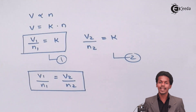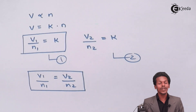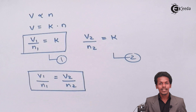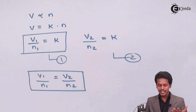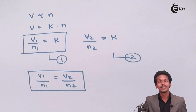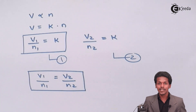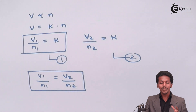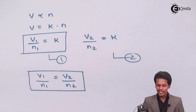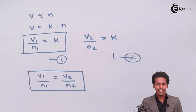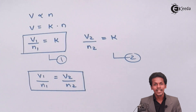Avogadro's Law basically depends on the number of moles as well as Avogadro's number, because for one mole of a gas it contains 6.022 × 10²³ particles or molecules of that gas. For one mole, as we learned in basic chemistry, one mole of a gas occupies 22.4 dm³ of volume and contains 6.022 × 10²³ particles. So this law implies that if the number of moles increases, the volume will also increase.